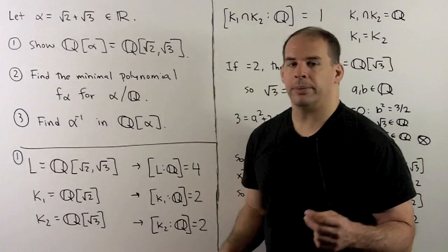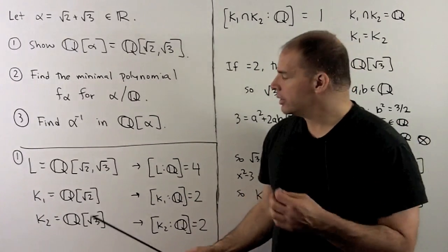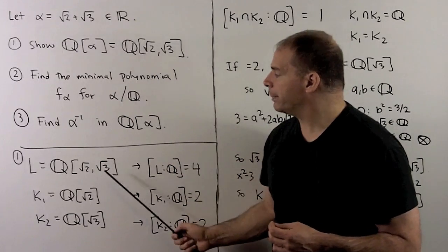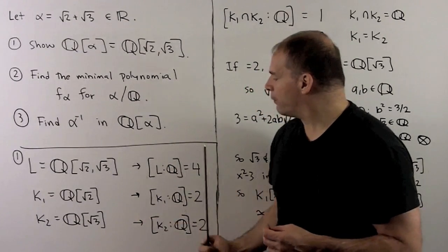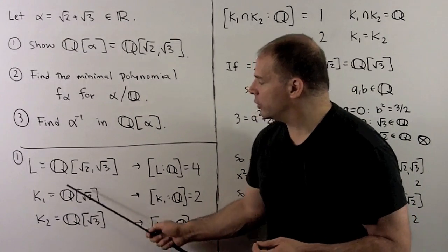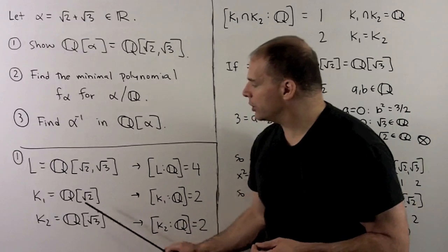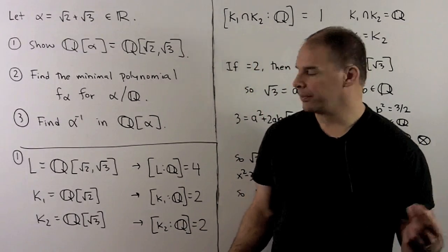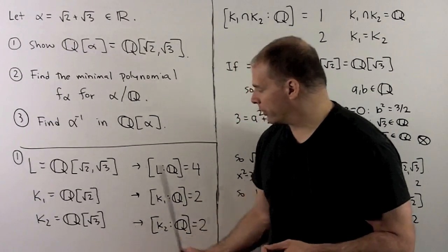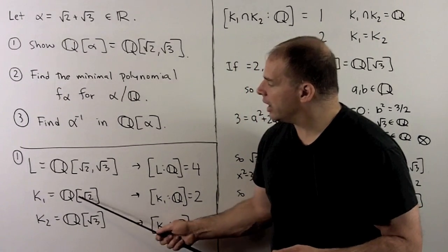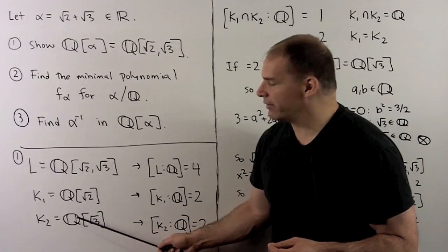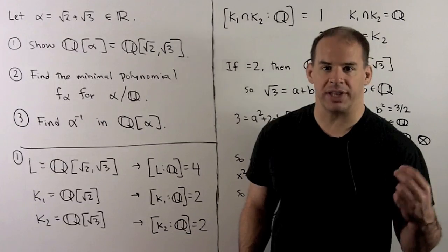For part 1, I want to show all the details. Our first step: I want to show that ℚ adjoined square root of 2 adjoined square root of 3, we'll call this L, has degree 4 over the rationals. Let's call K1 = ℚ adjoined square root of 2, K2 = ℚ adjoined square root of 3, both in the reals. Now each of these fields has degree 2 over the rationals, with a basis over the rationals given by {1, √2} for K1 and {1, √3} for K2. So these are degree 2 extensions.